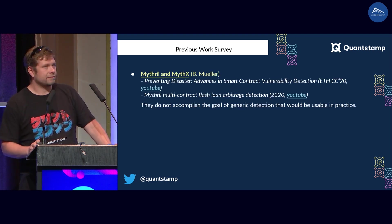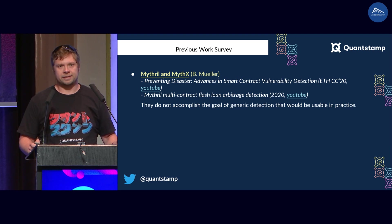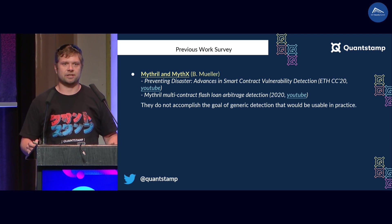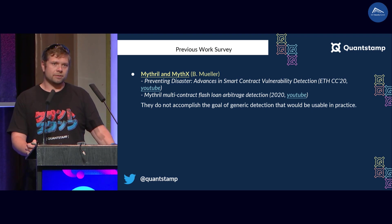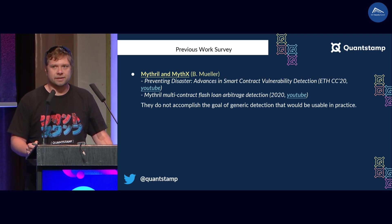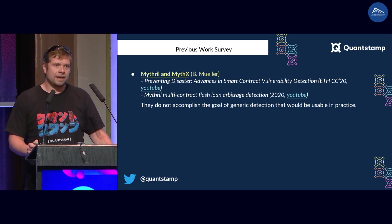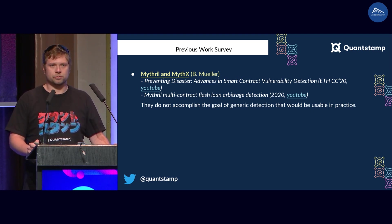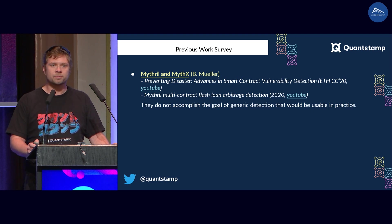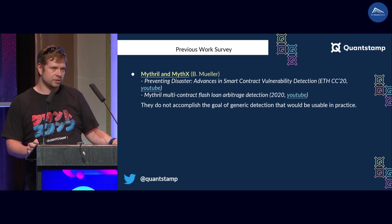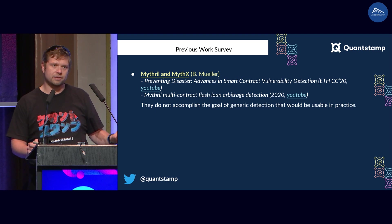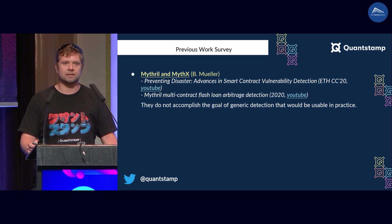For this reason, I've been on the lookout for a tool that could aid the discovery of such attack vectors, pretty much since the very first flash loan attack. That first attack happened at ETH Denver in 2020, and right in 2020 there were some first attempts to use automation to discover such attacks. The very first one I'm aware of was Bernhard Muller, who used Mythril and MythX to discover flash loan attacks, and he gave talks here in Paris at EthCC about that in July 2020.